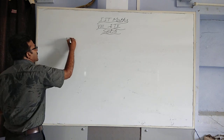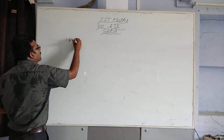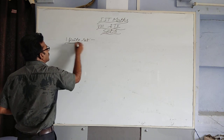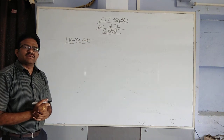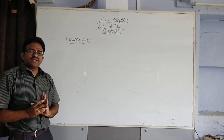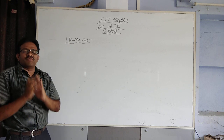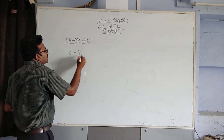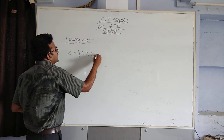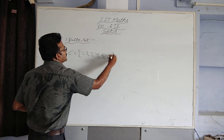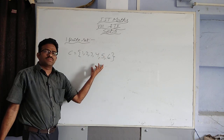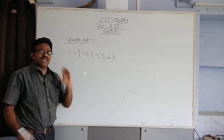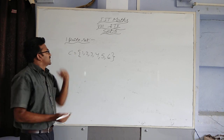First one is finite set. What is meant by a finite set? A finite set is nothing but a set consisting of a countable number of elements. For example, set C equal to {1, 2, 3, 4, 5, 6}. These are countable. A set consisting of a countable number of elements is called a finite set.